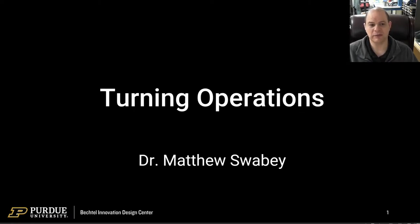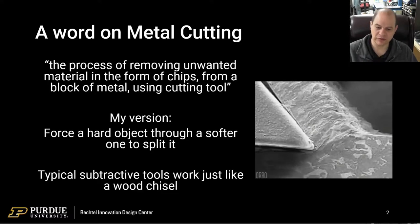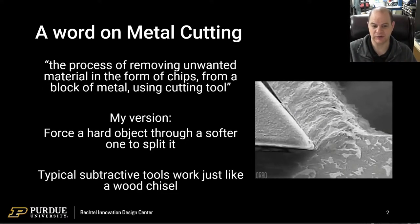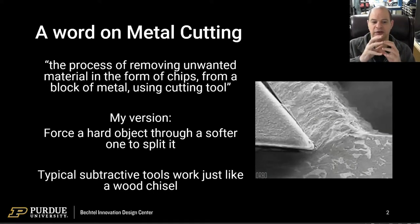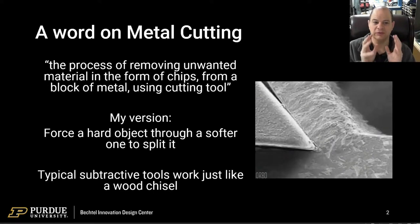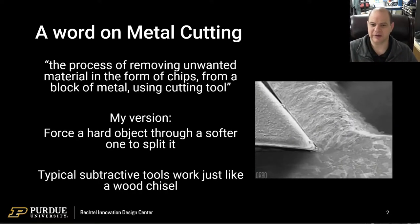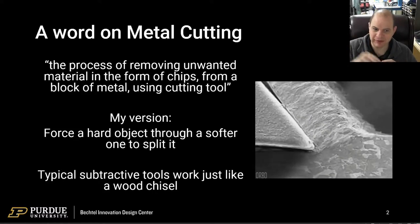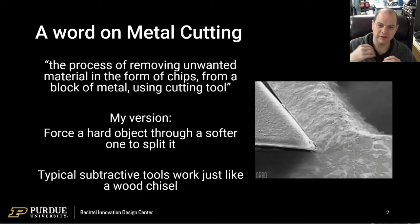First we want to talk about the actual process of metal cutting broadly. It's the process of removing unwanted material. Metal turning is a subtractive process. We're starting with a large block and just like a sculptor we're removing all the pieces of the block, revealing the part design that we want. We take a harder thing and ram it into a softer thing, cutting away and splitting away the parts we don't want.